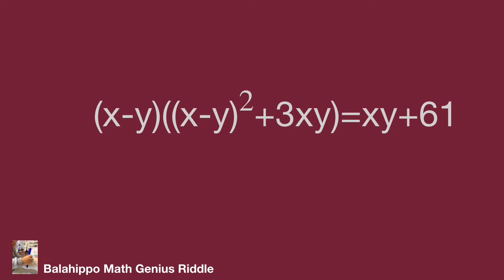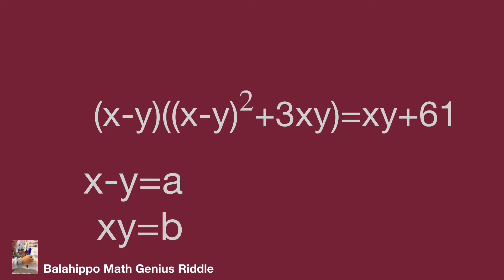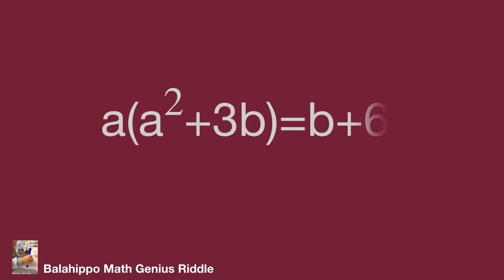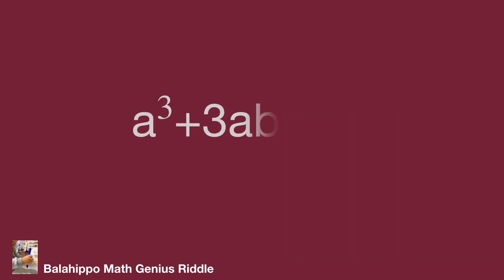For easy calculation, define x minus y equal to a and x times y equal to b. Substitute x minus y by a and x times y by b into the equation. It becomes a times (a squared plus 3b) equals b plus 61, which expands directly to a cubed plus 3ab equals b plus 61.